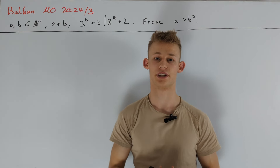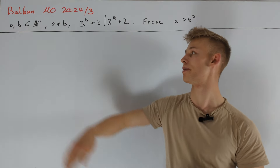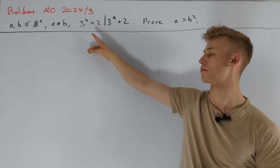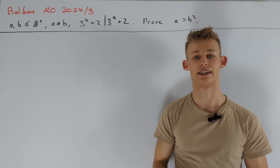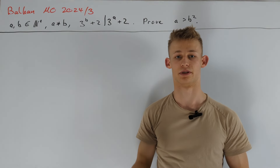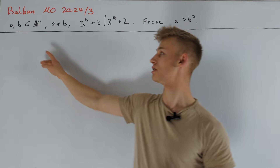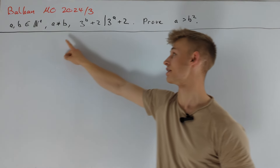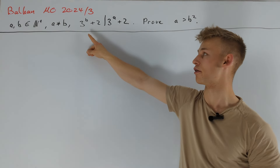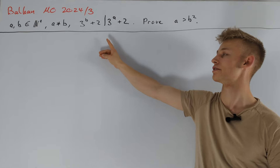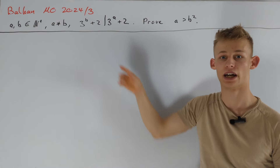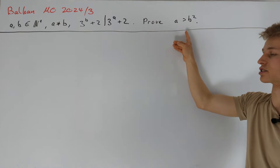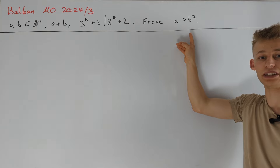Hey guys, today I want to present a solution to the Balkan Math Olympiad 2024 Problem 3. Let's take a look at the problem statement. We have given two different positive integers a and b such that 3 to the power of b plus 2 divides 3 to the power of a plus 2. Our task is to prove that a is greater than b squared.